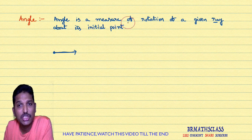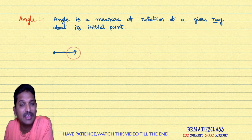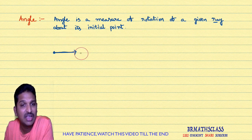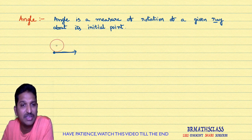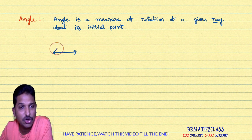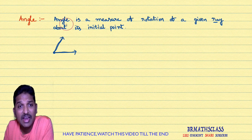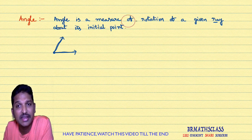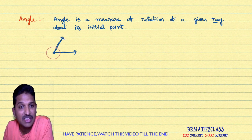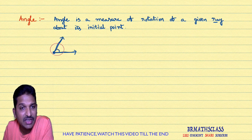What is angle? Angle is a measure of rotation of a given ray. I need to rotate this ray. I can rotate this ray in two directions — one is anti-clockwise direction, another one is clockwise direction. I will rotate this ray through some distance, then I will get the final position of the ray like this. Angle is a measure of how much rotation we did. This rotation is done about the initial point, and this is known as angle.